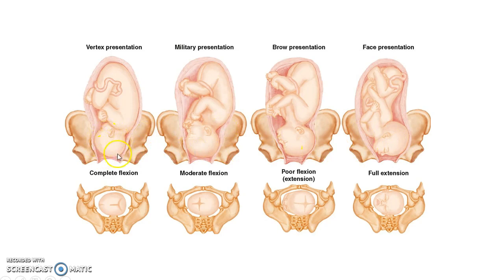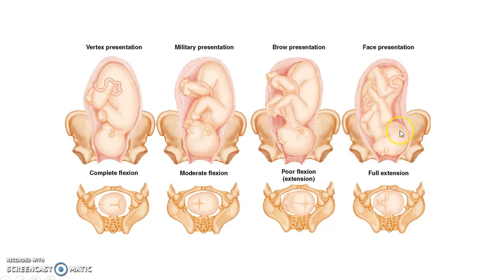In case of cephalic presentation, the presenting parts can be vertex, brow, or face. In the first picture the presenting part is the vertex of the fetus. In the next case also the presenting part is vertex. In this case the brow of the fetus overlies the internal os, so it is brow presentation. In this case the face of the fetus overlies the internal os, so it is face presentation. The presenting part depends upon the attitude of the fetus, which we will see in the next slide.